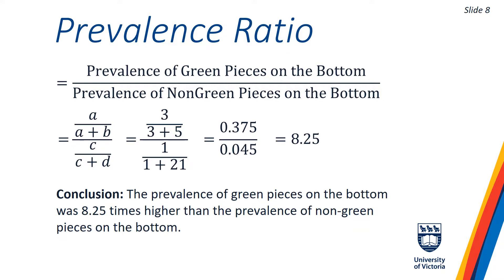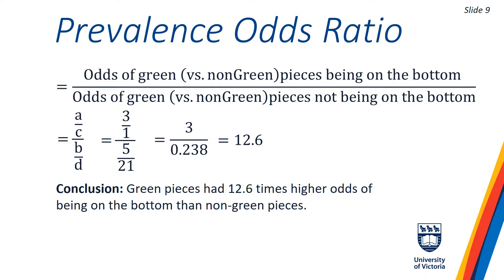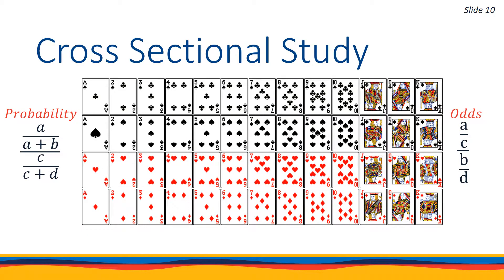Finally, on slide 9, we present the prevalence odds ratio, which represents the odds that a green piece would be on the bottom compared to the odds of a non-green piece being on the bottom. On slide 10, I've provided an illustration of the difference between the prevalence ratio and the prevalence odds ratio.